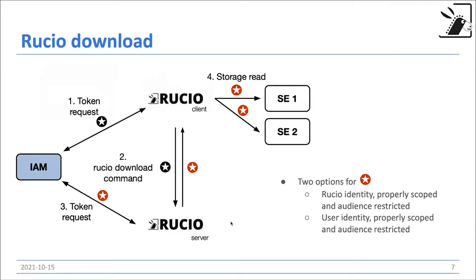The biggest change, more recently discussed in the authentication working group, is the Rucio download. There we really want to have a very fine-grained workflow where tokens are limited to only being specifically allowed to access certain files or certain directories on only certain storage elements. The user would start a download workflow with a Rucio download command. First, the user gets its own identity token and goes with it to the Rucio server. The Rucio server would then request a token from IAM which is very scope-limited and audience-limited to the specific files this Rucio download command is involved with, and replies this token to the Rucio client.